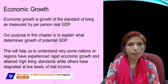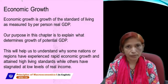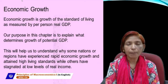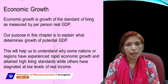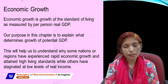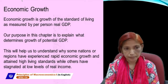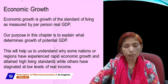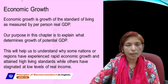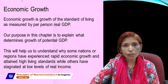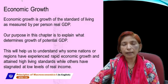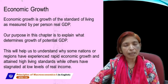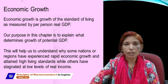Real GDP shows the actual position of output in the country, while potential GDP shows the capacity to produce — whatever the available resources in our country have the capacity to produce. These two concepts differ: potential GDP shows capacity to produce, and real GDP shows actual production. Both may be equal or may not be; sometimes potential GDP is greater, and sometimes real GDP is greater.